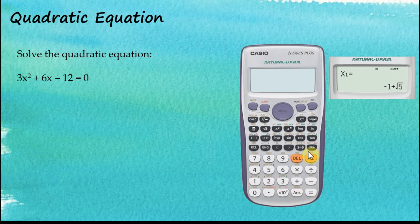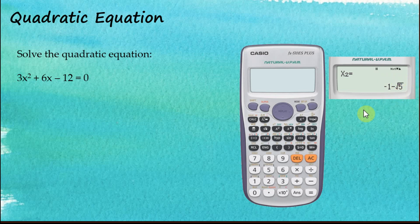The calculator gives the first solution as negative 1 plus the square root of 5. There is a down arrow icon — tap it to see the second solution, which is negative 1 minus the square root of 5. If you don't want the answer in root form, tap the SD button to convert it to decimal numbers.